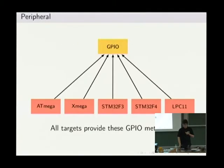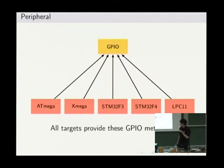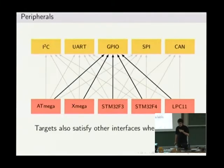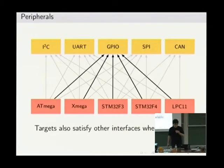This GPIO interface is available on all these targets. The XPCC framework works on ATtiny, AT90, ATmega, Xmega, and so on — both 8-bit and 32-bit microcontrollers, which is quite neat. Applying the same logic of finding the most common interfaces across all these microcontrollers, you can see there are a lot of shared interfaces: I2C, the serial interface, SPI, and CAN — the controller area network also used in cars.